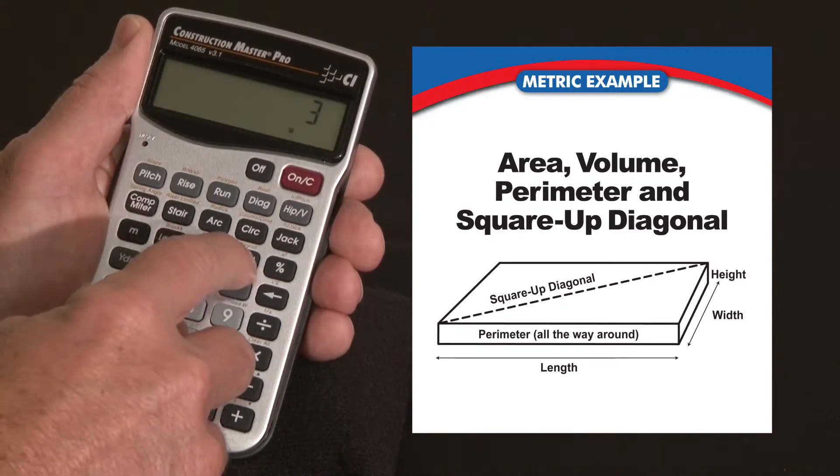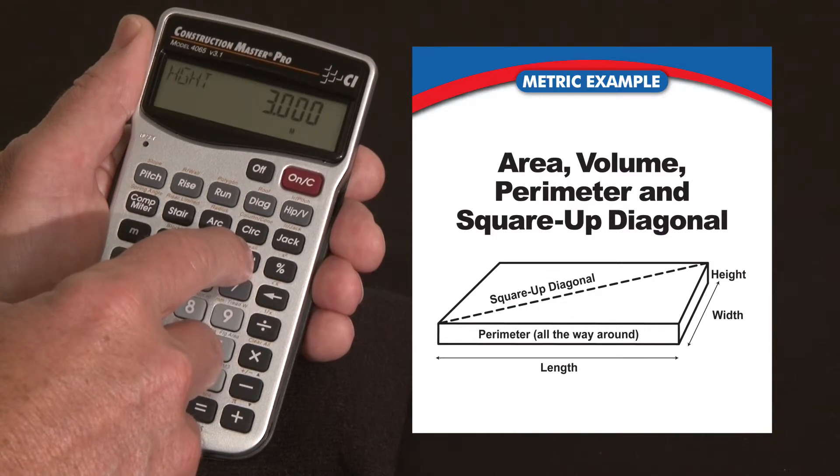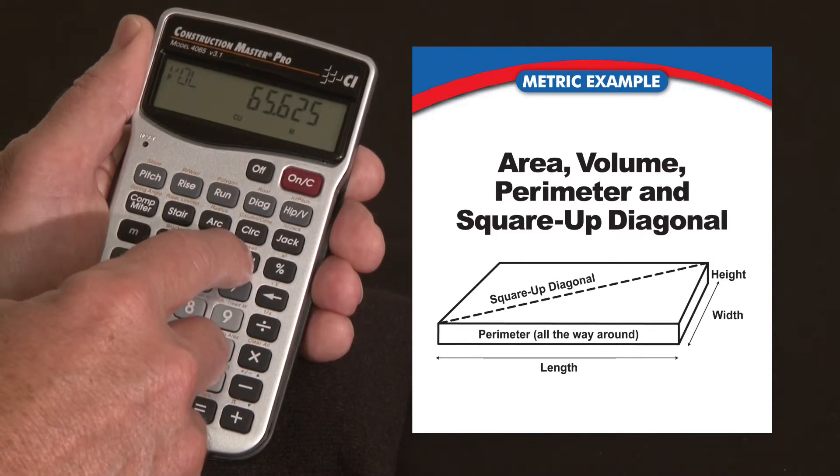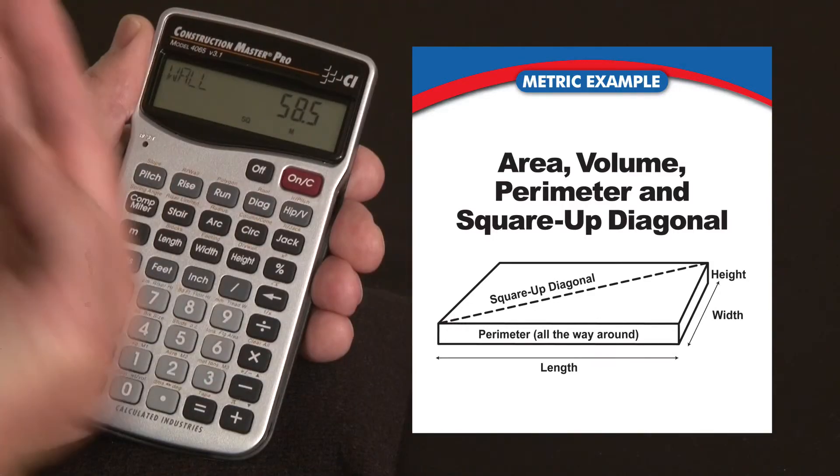So if I had 3 meters as my height, we're doing a room and we're looking for a surface area of sheetrock or drywall or paneling material. When I press the height key, the volume doesn't matter anymore. The wall surface area is 58 square meters around this room.